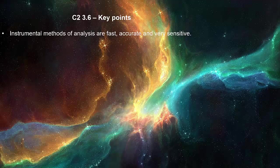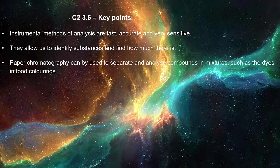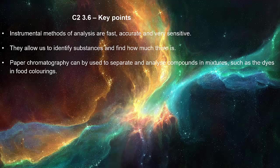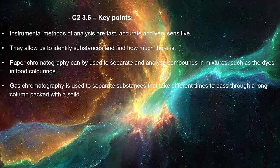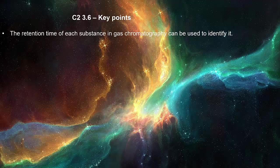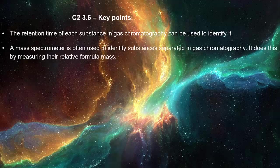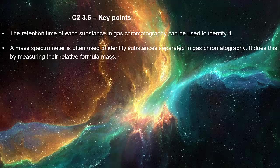Instrumental methods of analysis are fast, accurate, and very sensitive. They allow us to identify substances and find how much there is. Paper chromatography can be used to separate and analyze compounds and mixtures such as dyes and food colorings. Gas chromatography is used to separate substances that take different times to pass through a long column packed with a solid. The retention time of each substance in gas chromatography can be used to identify it. A mass spectrometer is often used to identify substances separated in gas chromatography. It does this by measuring their relative formula mass.